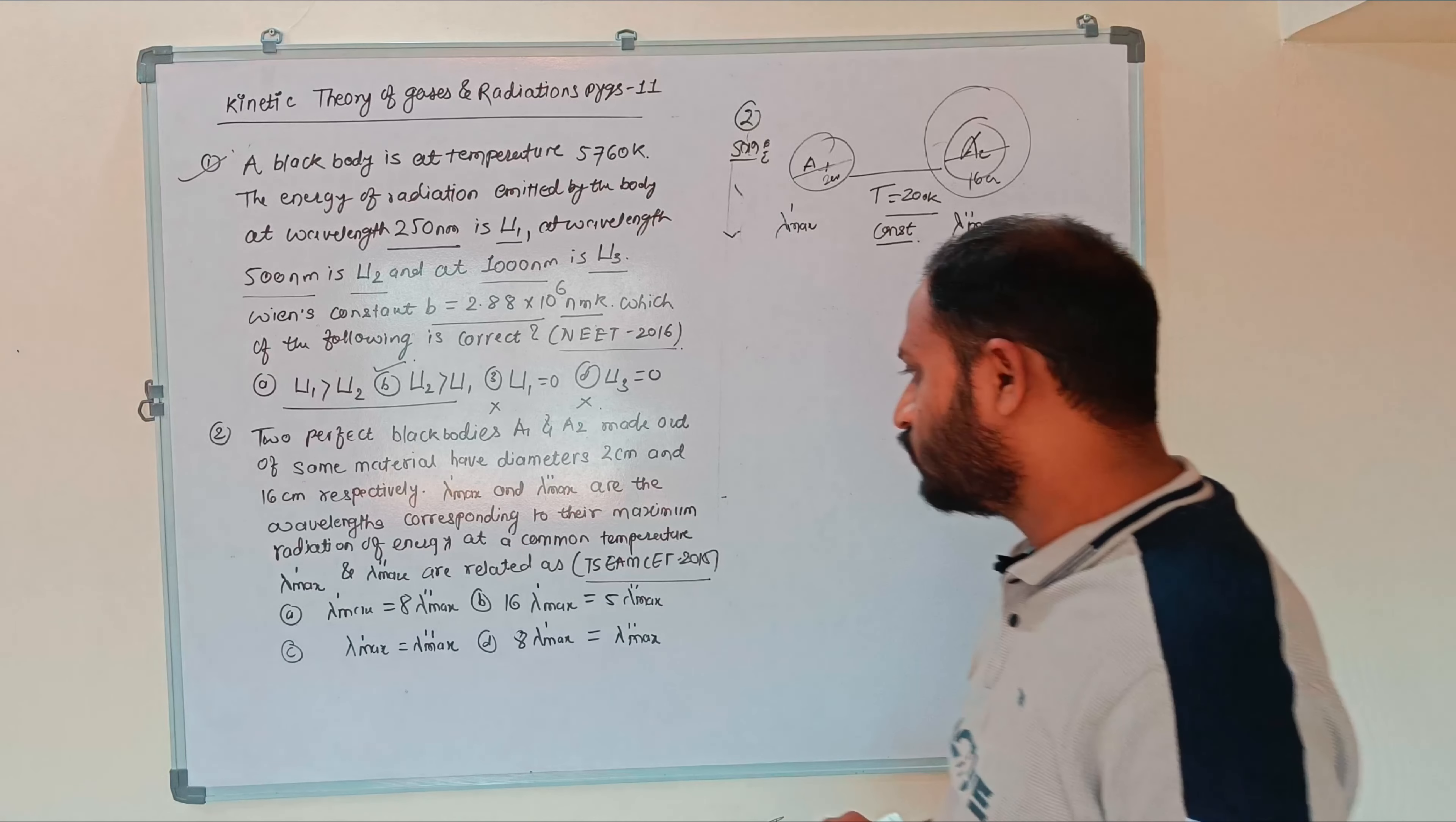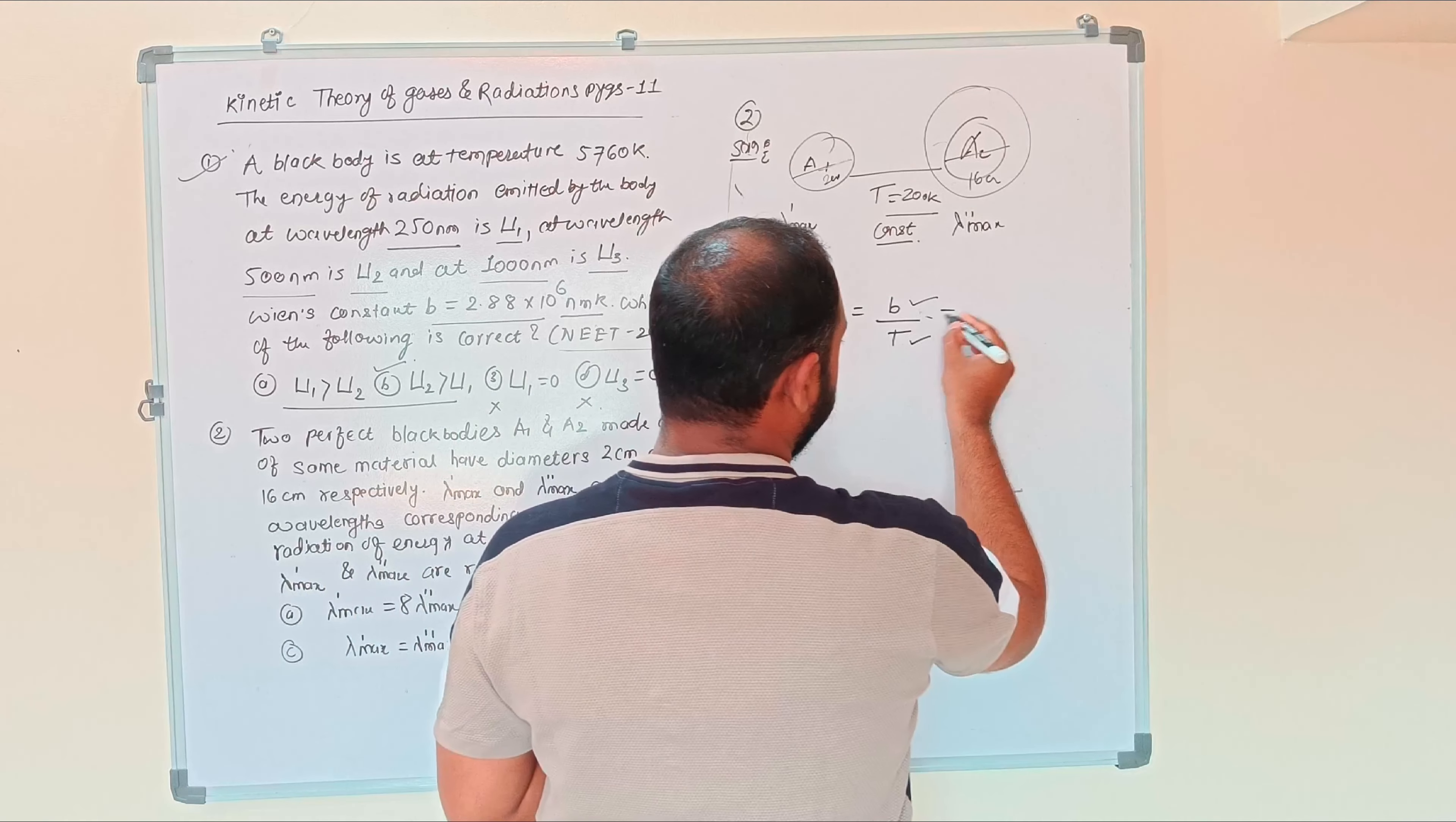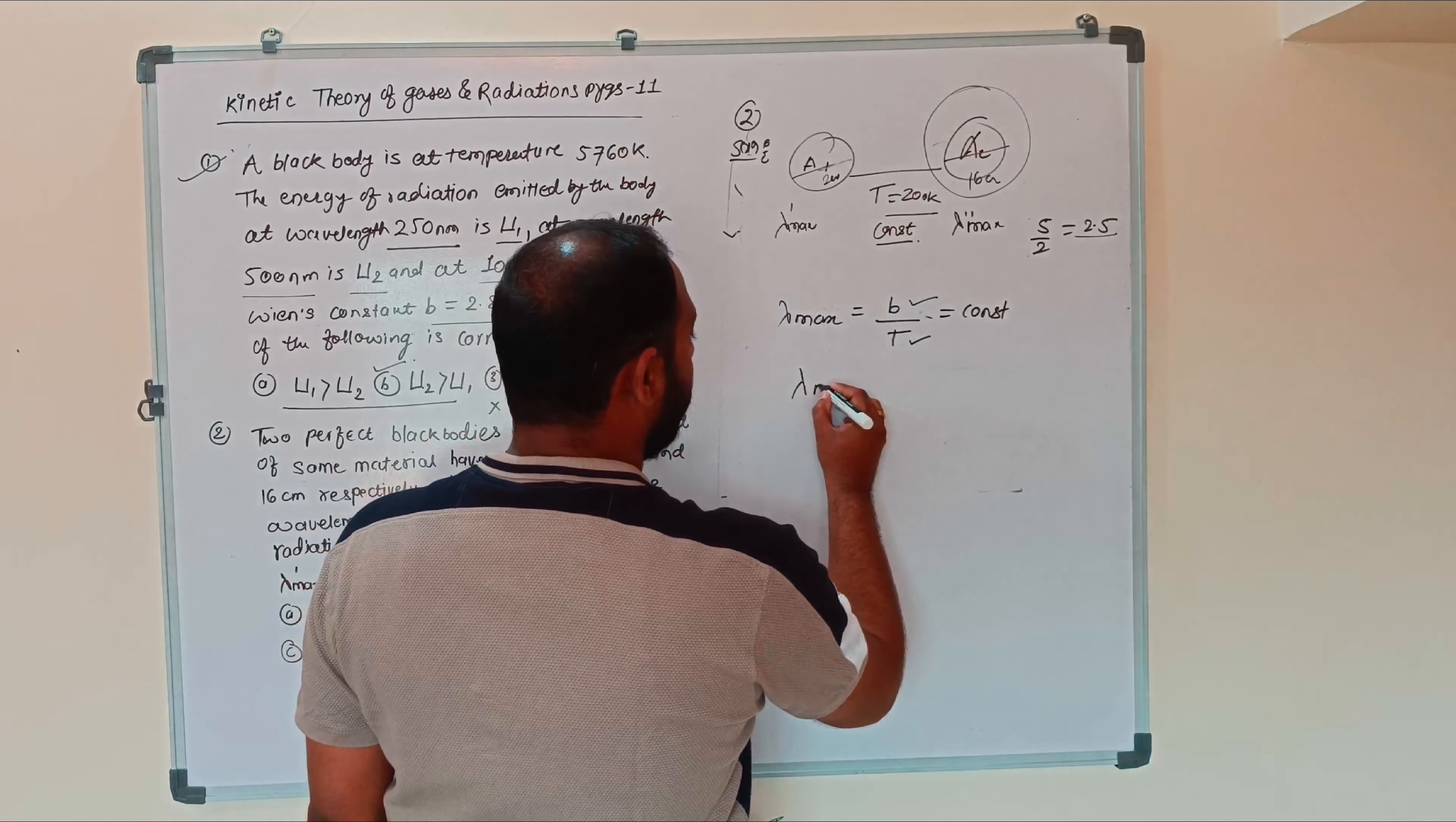They are asking to find the relation between lambda max prime and lambda max double prime. Lambda max equals b divided by T. The temperature is constant, so it remains constant. B is already constant, Wien's displacement constant. Constant divided by constant gives constant.